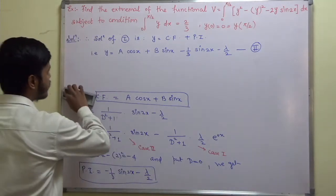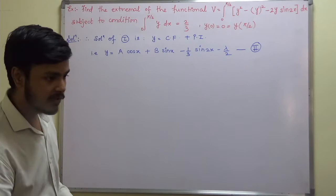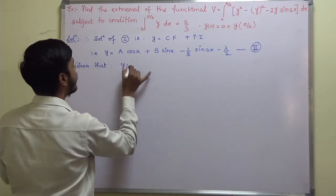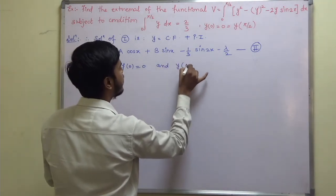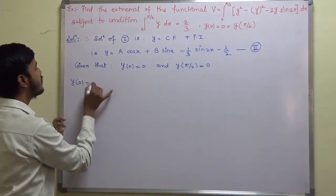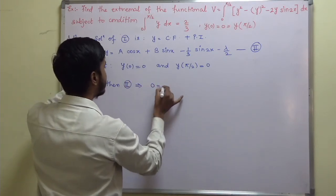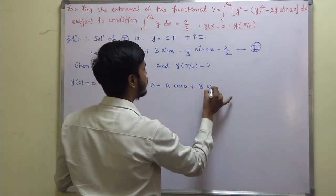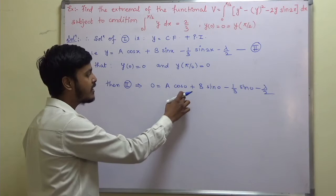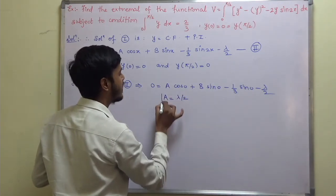Now find the constants a, b and the Lagrange multiplier. We are given y(0) = 0 and y(π/2) = 0. Applying y(0) = 0 to equation 2: 0 = a·cos(0) + b·sin(0) − (1/3)sin(0) − λ/2. Since cos(0)=1 and sin(0)=0, this gives a = λ/2.